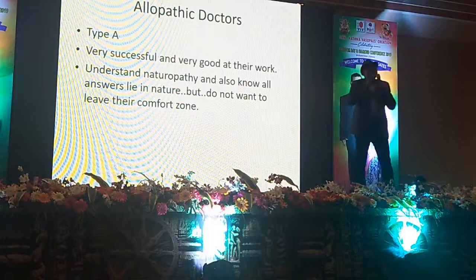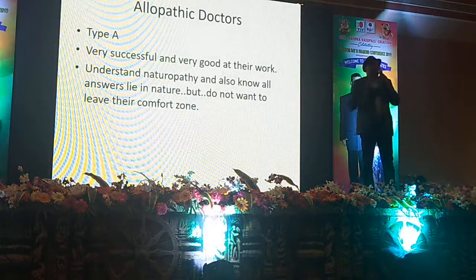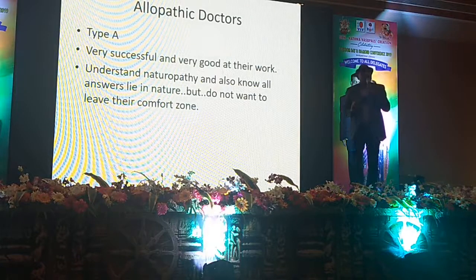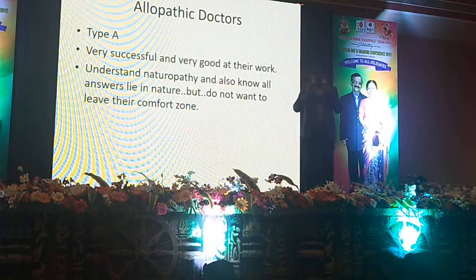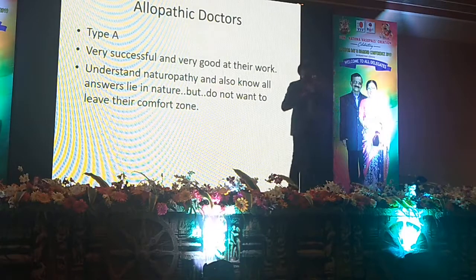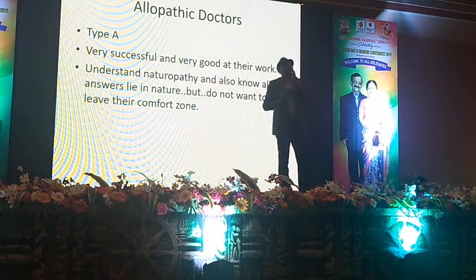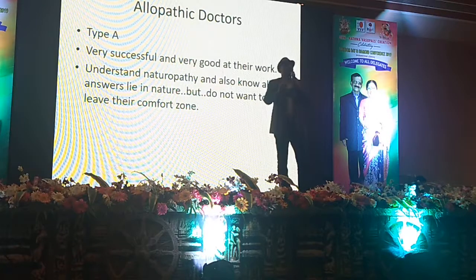When you want to convert an allopathy doctor, I will classify them into two types. Type A is a very successful doctor who understands naturopathy but is in a comfort zone. For example, if I am a cardiothoracic surgeon doing four bypasses a day at four lakh rupees minimum per surgery, even if I know that Ganoderma will clear the blocks, I don't want to do it. That is the Type A doctor.